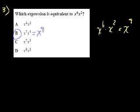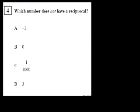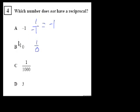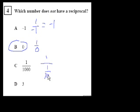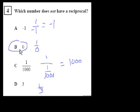Problem 4. They want to know which number does not have a reciprocal. The reciprocal of negative 1 is 1 over negative 1, which equals negative 1. The reciprocal of 0 would be 1 over 0, which is not defined. So the answer is choice B, zero. We don't know what 1 over 0 is. The reciprocal of 1/1000 is 1000, and the reciprocal of 3 is 1/3 — those all have reciprocals.